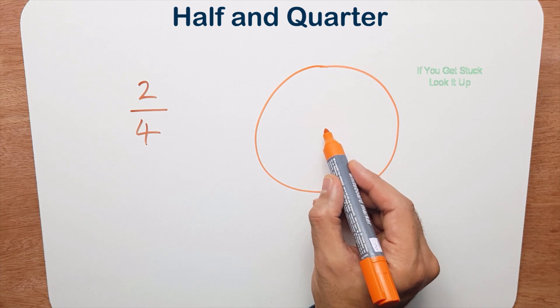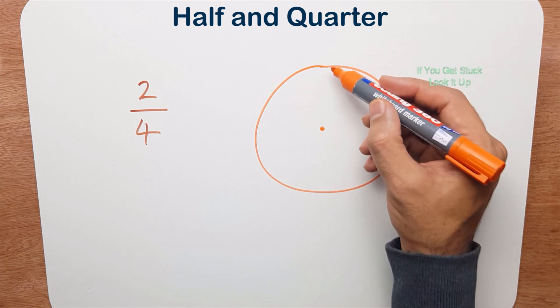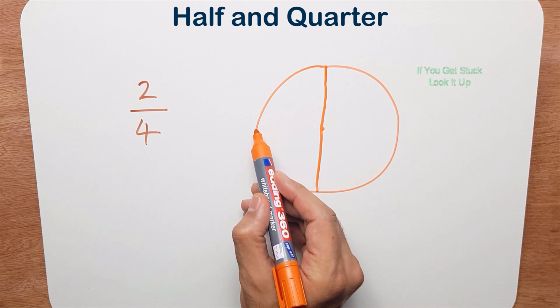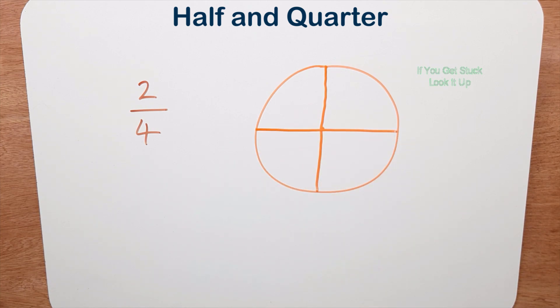There's the pizza and there's the center. So I need to cut it into four equal pieces. I halve it and I halve it again across there. I've now got four equal pieces and I need to shade two or eat two.